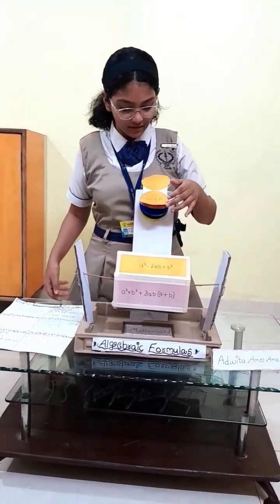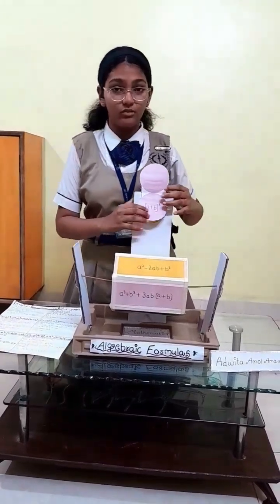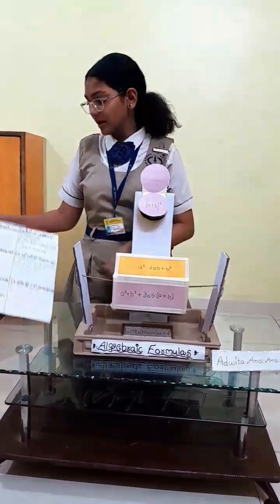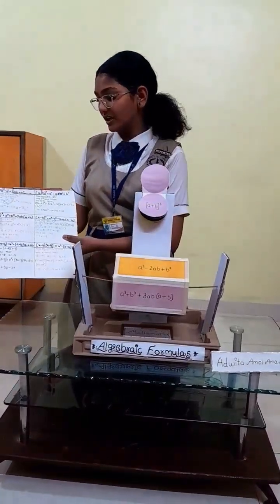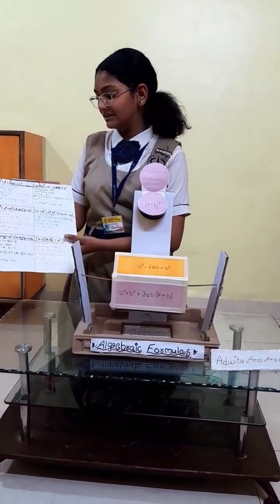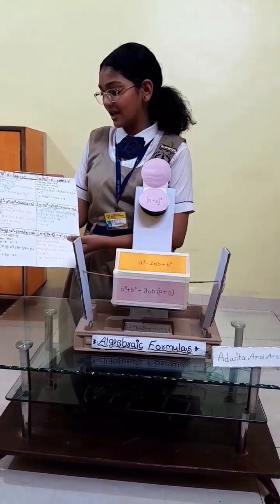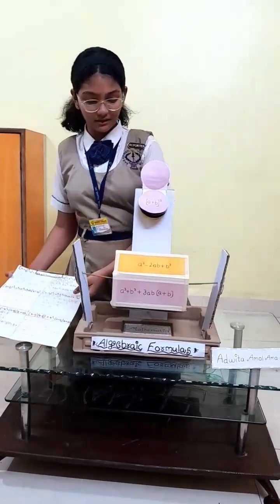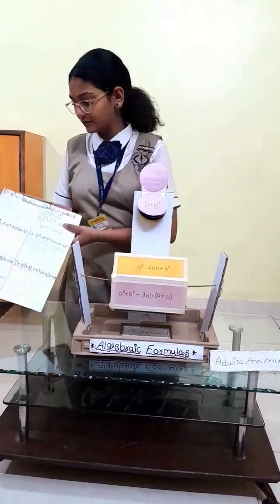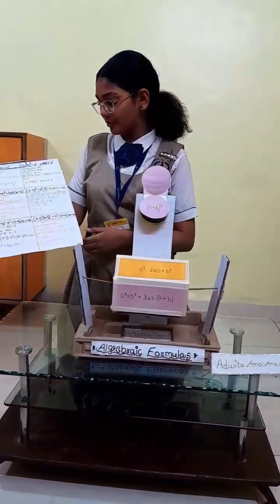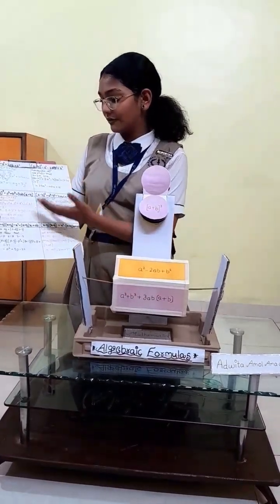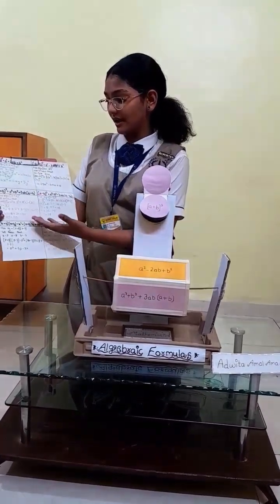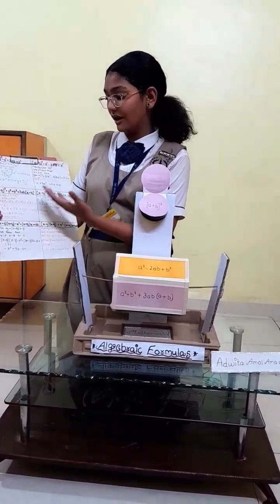Second formula: (a minus b)(a plus b) cube is equal to a cube plus b cube plus 3ab times (a plus b). Now we will solve the formula. After solving the formula, we will write the value.